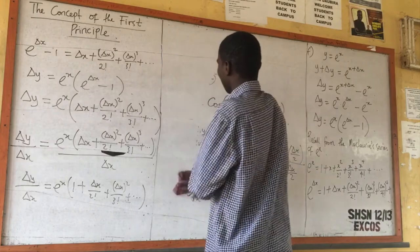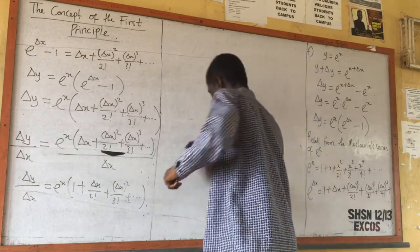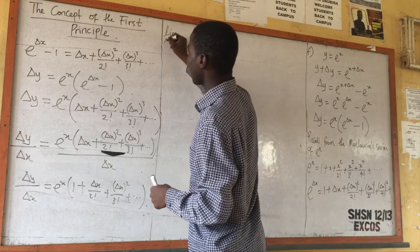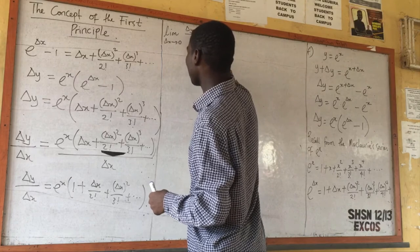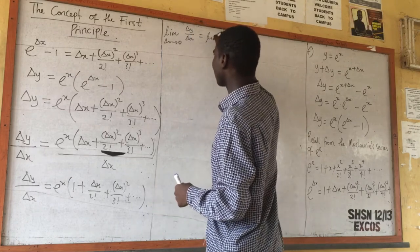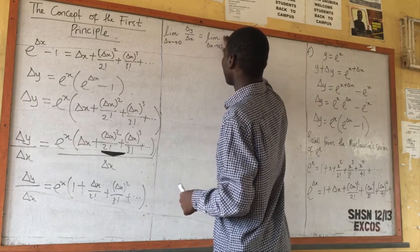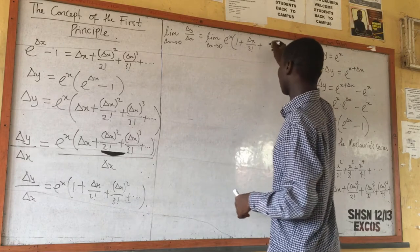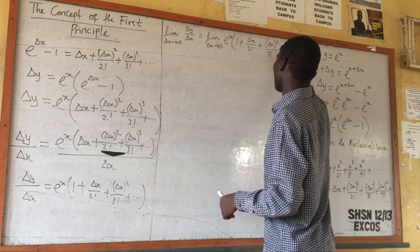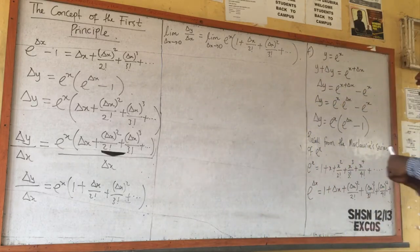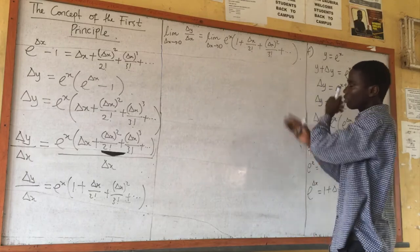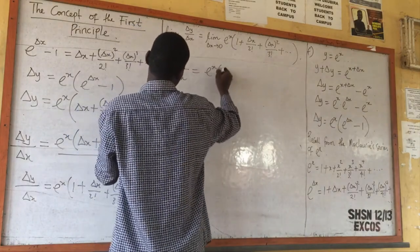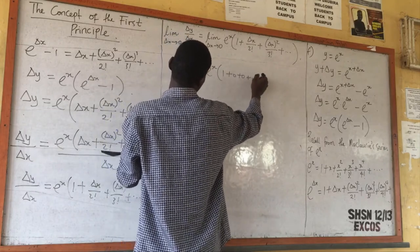At the end of the day, we take the limit of both sides. Limit as delta s goes to 0 of delta y over delta s equals e raised power s times 1 plus delta s over 2 factorial plus delta s squared over 3 factorial, and it goes on. As delta s goes to 0, this term will be 0, and everything upward will be 0. So dy/ds is equal to e raised power s times 1 plus 0 plus 0 plus 0, which is just 1.